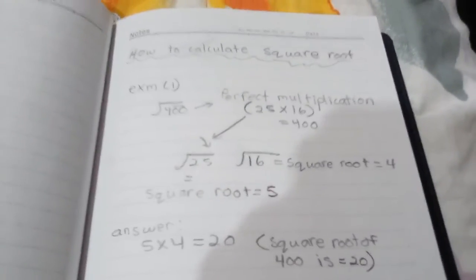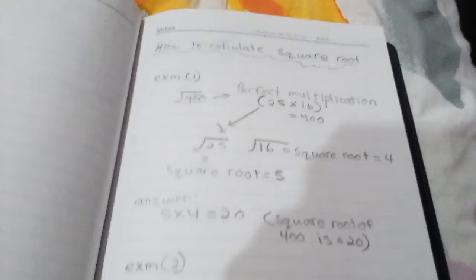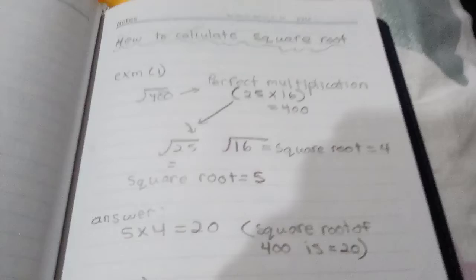Then you have to find the square root of 25. The square root of 25 you have to follow the same method above and also the square root of 16. So the square root of 25 is 5 and the square root of 16 is 4 as you can see there.